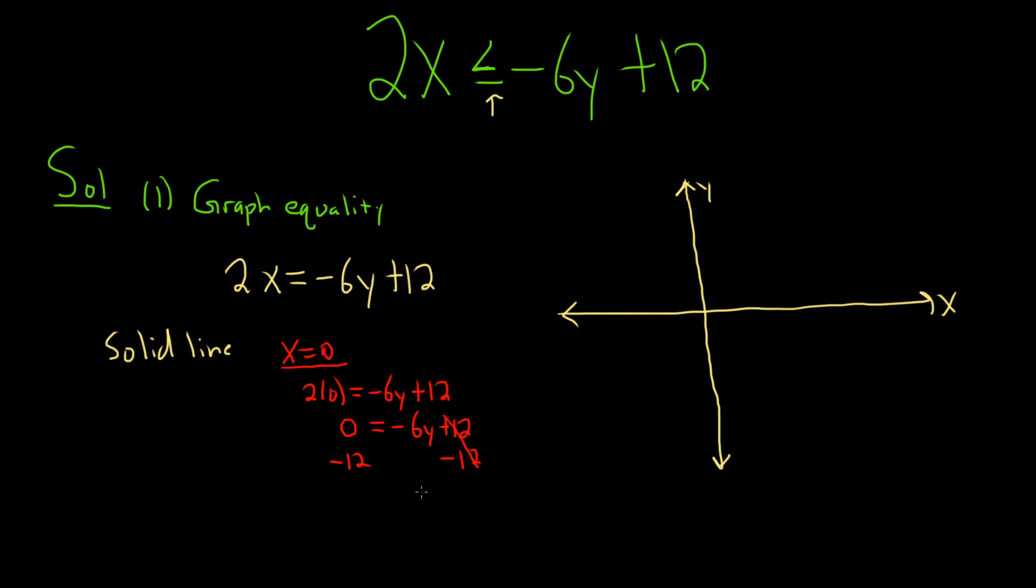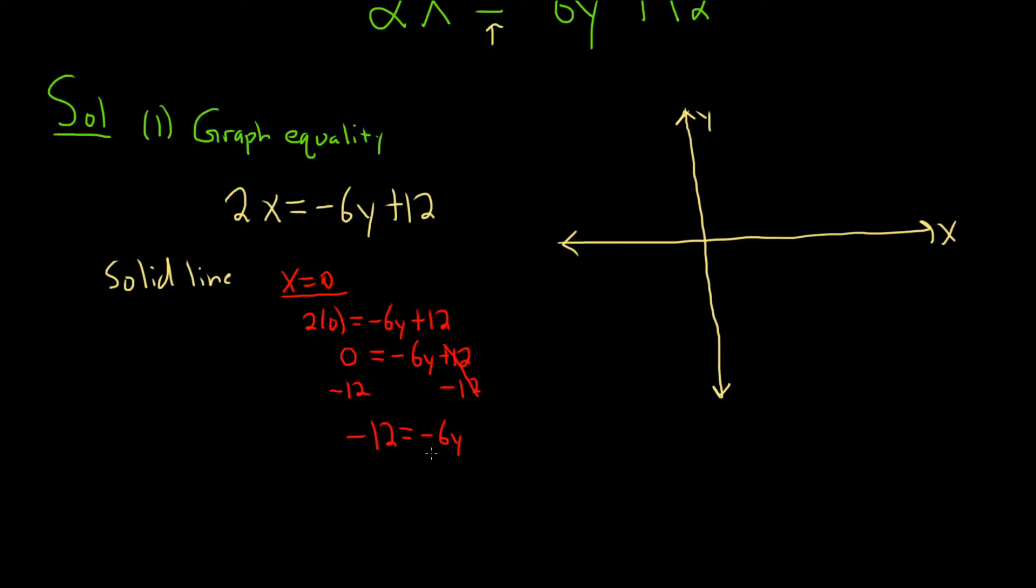These cancel. So negative 12 is equal to negative 6y. And then just divide both sides by negative 6. Divide by negative 6. So we have y equals 2. So when x is 0, y is 2.